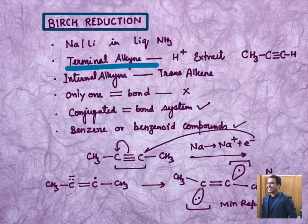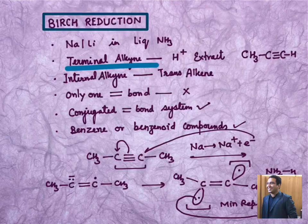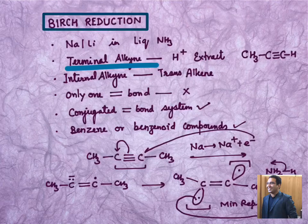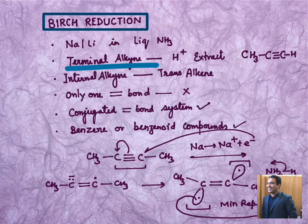After doing this much, what could be the next possible step? In the next possible step, ammonia which you have drawn, this negative anion is capable enough to pick this hydrogen and set free NH2- out of it.